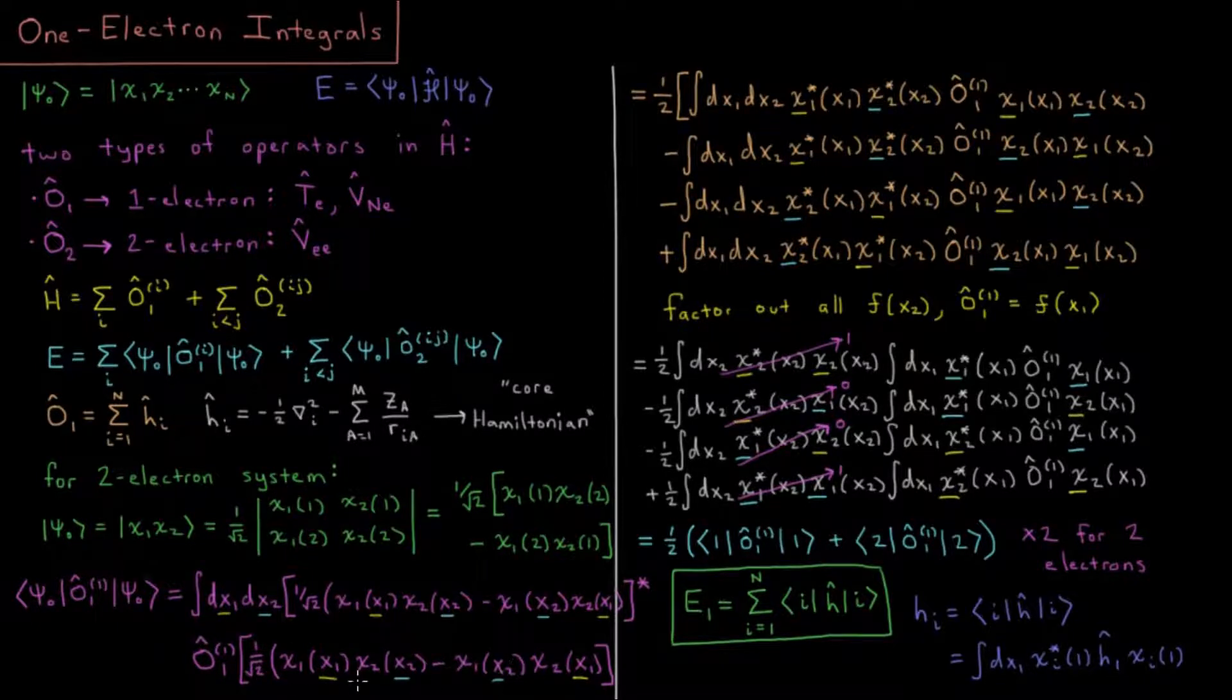So we have ψ, our determinant, ψ*, the complex conjugate of our determinant, and the operator acting on it, which is the one-electron operator for electron 1. There will be a similar term for electron 2, but we can get a lot of mileage out of just considering the case of what happens for the first electron and generalizing beyond there.